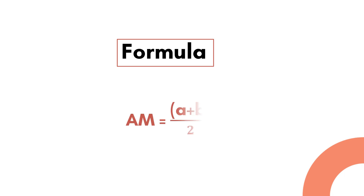Here is the formula for finding the arithmetic mean. Arithmetic mean is equal to (a + b) divided by 2. Take note that a and b here could be any real numbers.